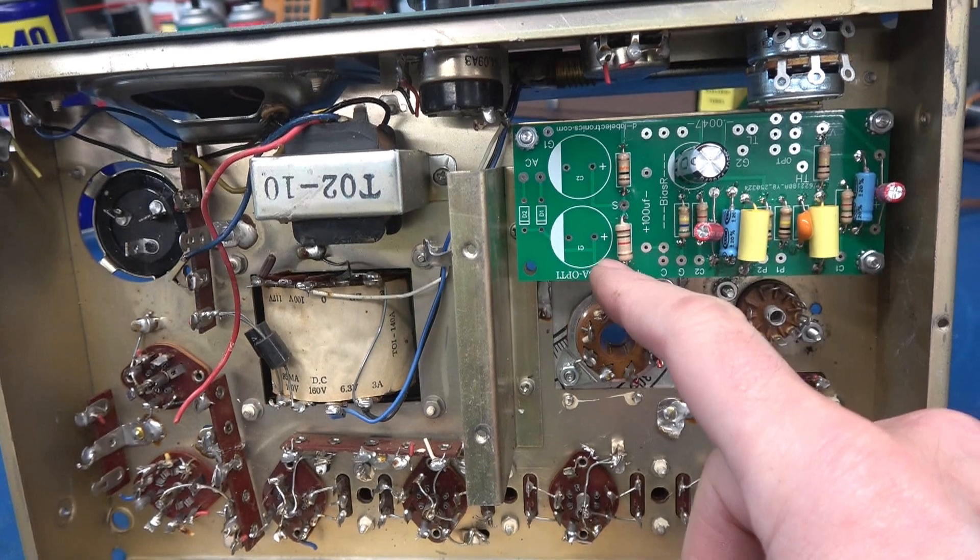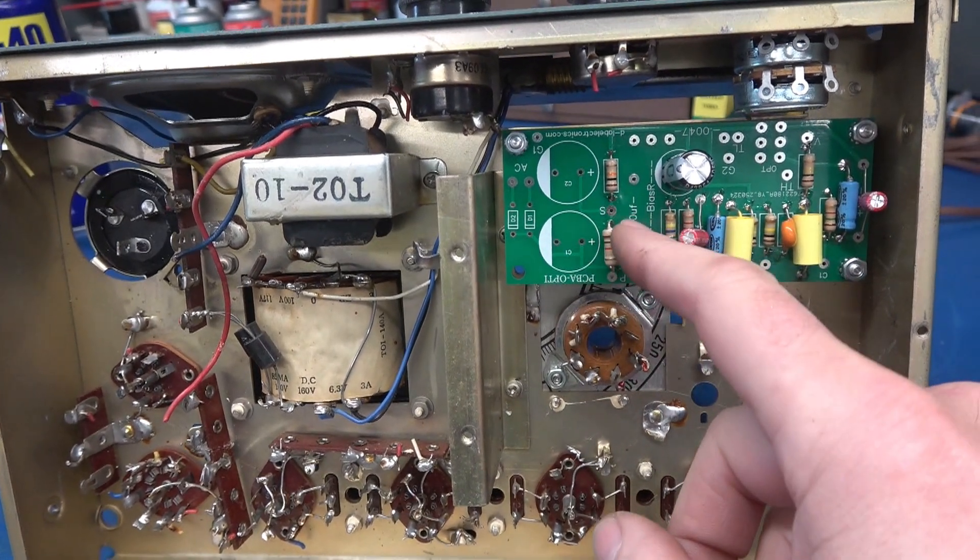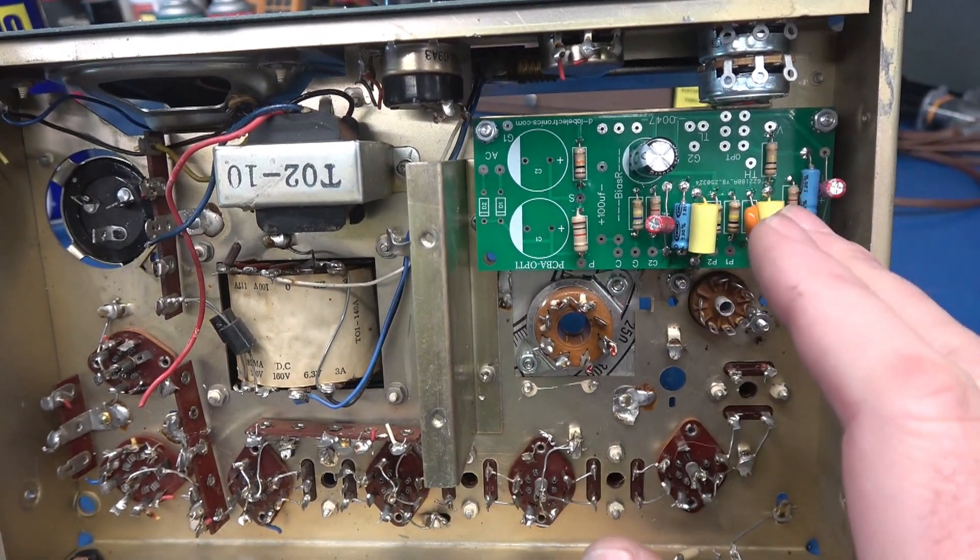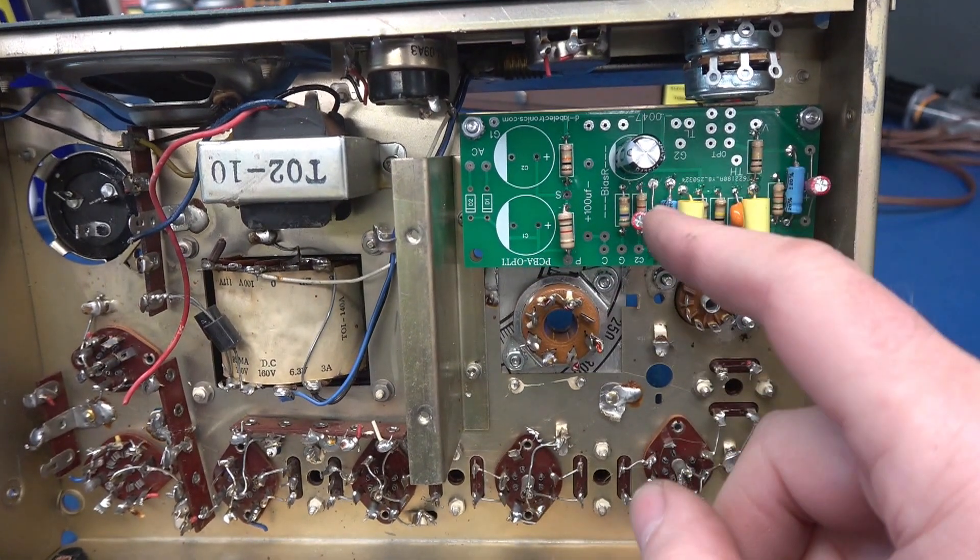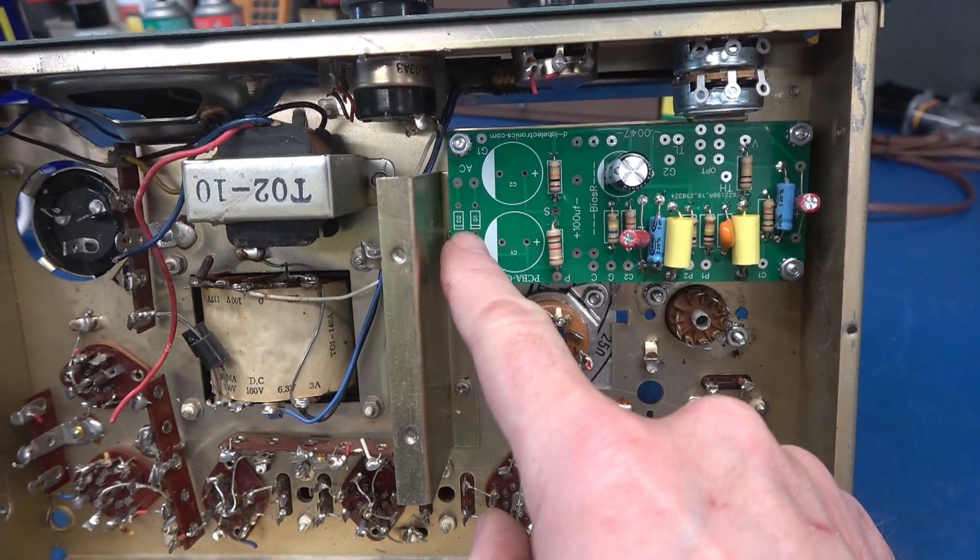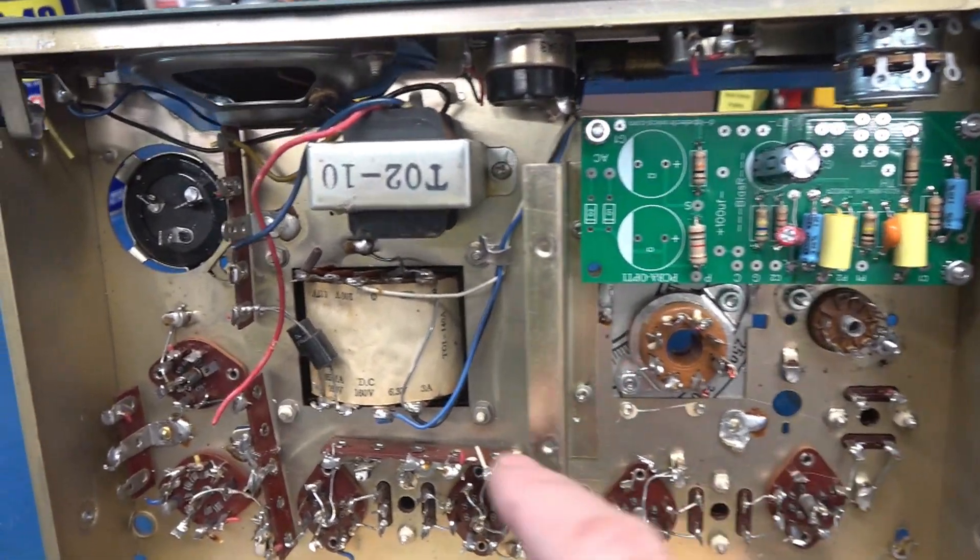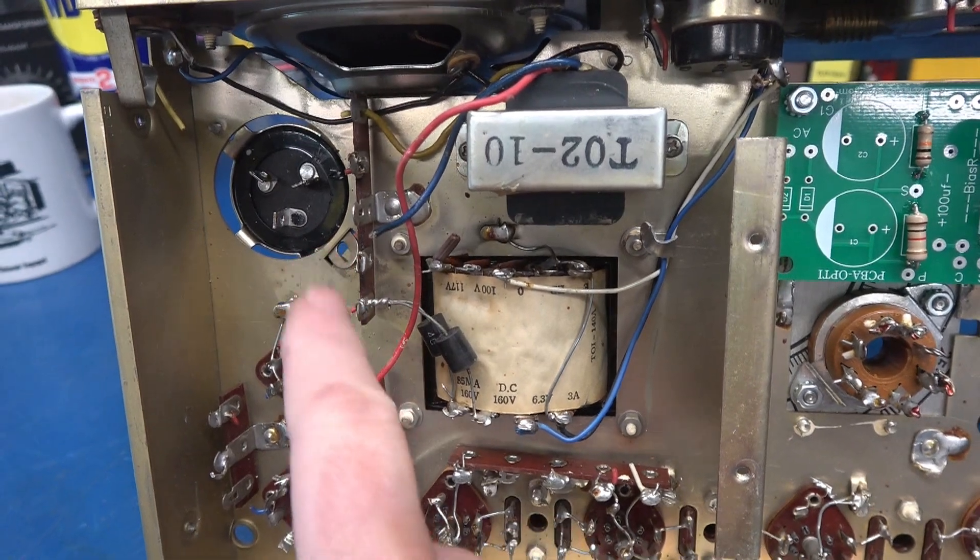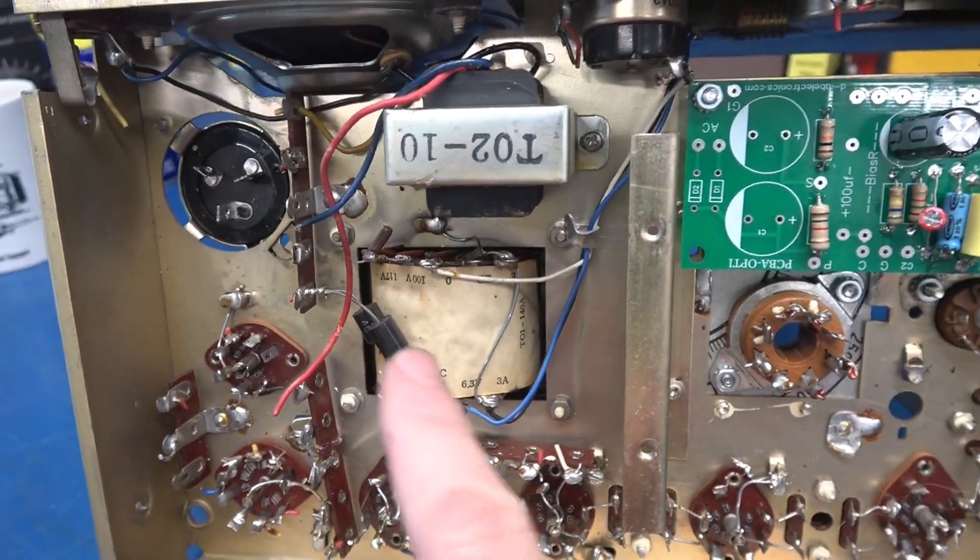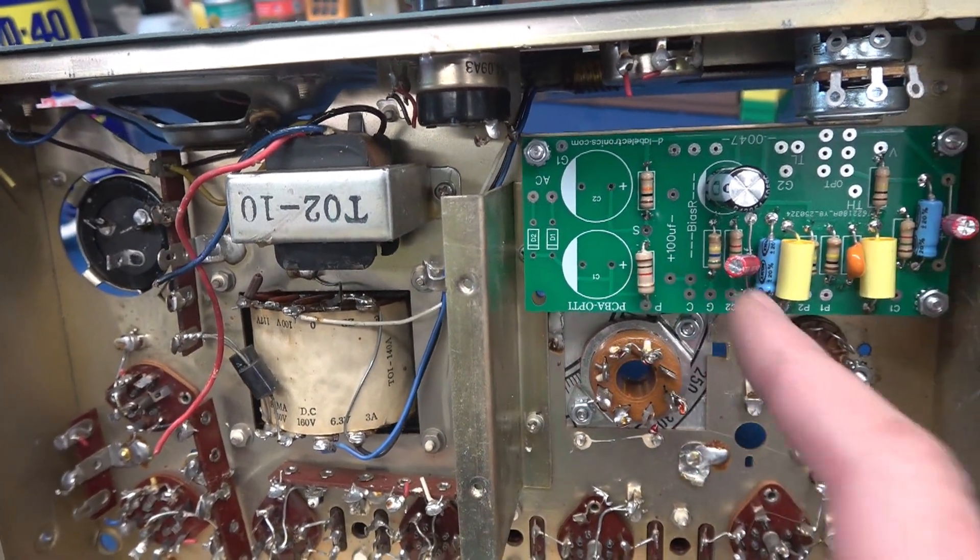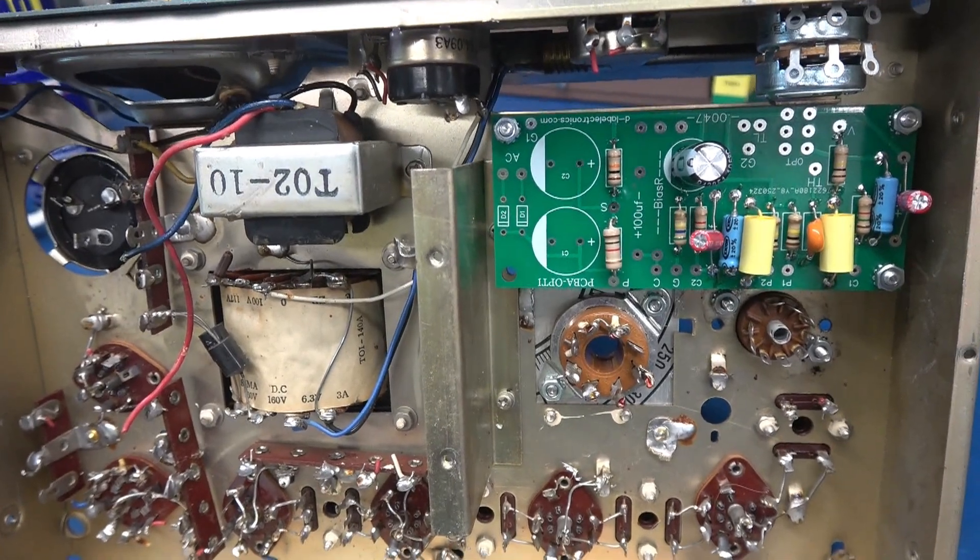You'll see that there's some areas on the Optiplex board that are not populated. That's because this was an all-in-one board. So it had the rectifiers and the filter caps on this board. But since we are using an external filter cap and rectification, I'll simply be swinging the power supply DC lines over to the Optiplex board.